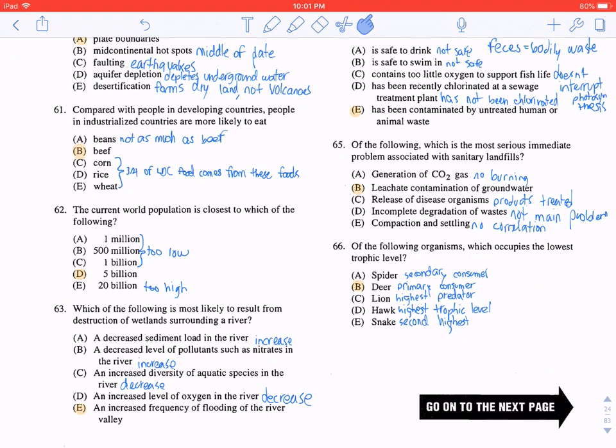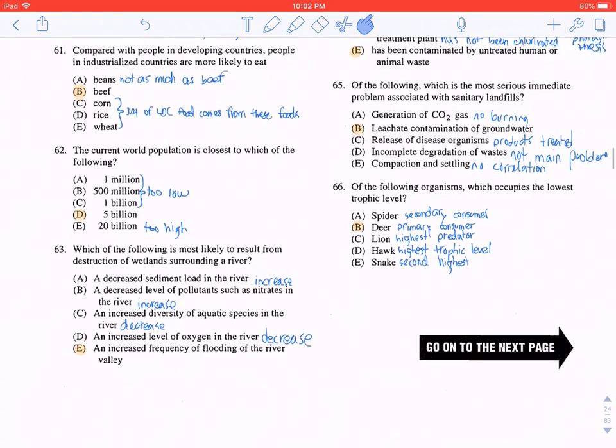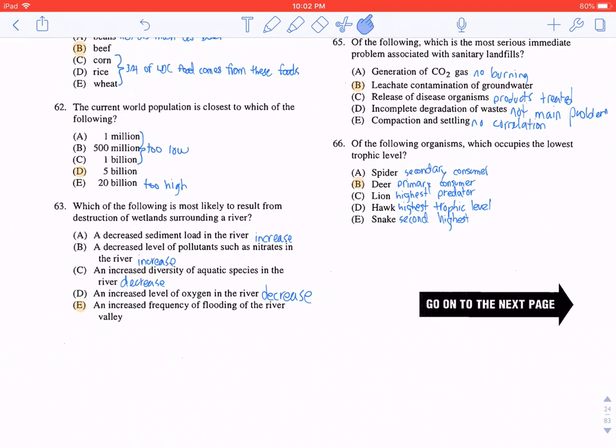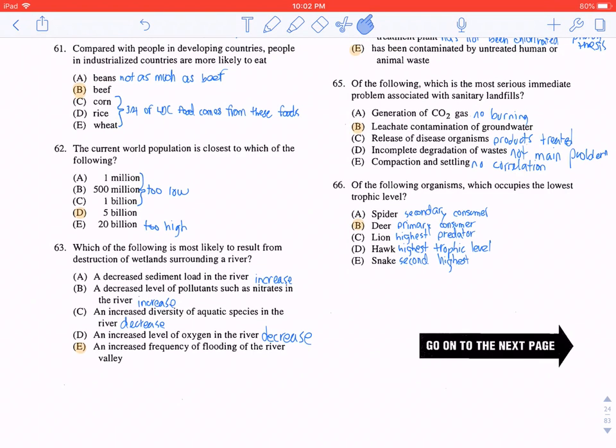Question 65: Of the following, which is the most serious immediate problem associated with sanitary landfills? It wouldn't be A, because there's no burning of materials with sanitary landfills which would release CO2 gas. It wouldn't be C, because the products are actually treated. It wouldn't be D, incomplete degradation of waste, because this is not the main problem. And it wouldn't be E, because there's no correlation with compaction and settling. The correct answer here is B, leachate contamination of groundwater.